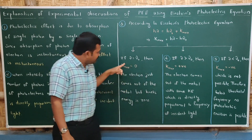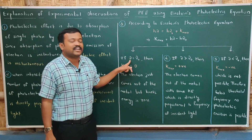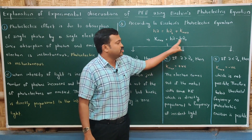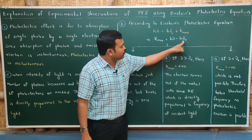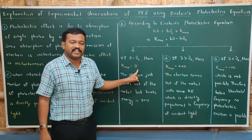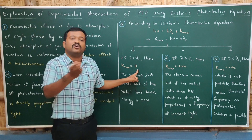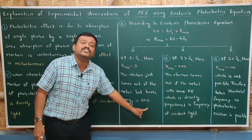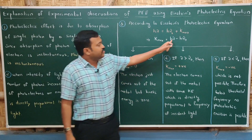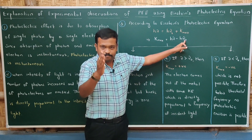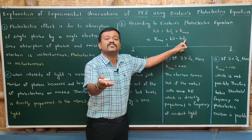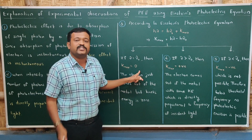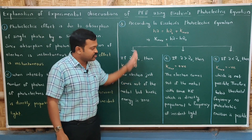In the first case, let us take the frequency of the incident light equal to the threshold frequency (ν = ν₀). Then K_max = h(ν − ν₀) = 0. This means the electron comes out of the metal but will not move — it has zero kinetic energy. So if the frequency of incident light equals the threshold frequency, the energy of the photon equals the work function, and the kinetic energy of the photoelectron is zero.